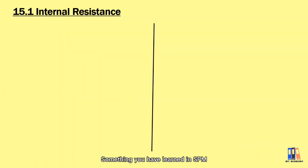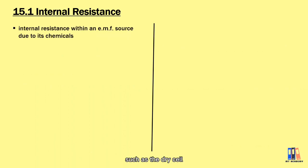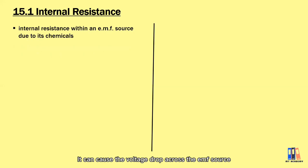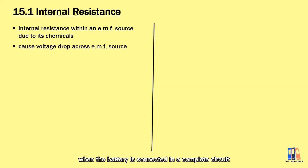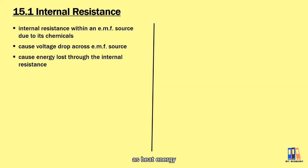First is about internal resistance — something we have learned in SPM, so I will just briefly talk about it. It is defined as the resistance inside the EMF source, such as a dry cell, due to the chemical itself. It can cause a voltage drop across the EMF source when the battery is connected in a complete circuit, and it also causes energy loss through the internal resistance as heat energy.